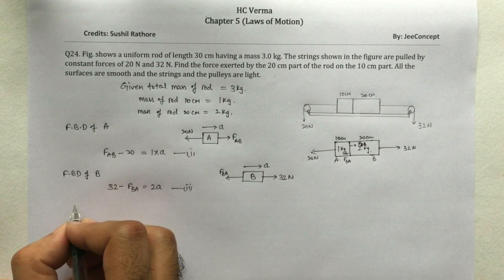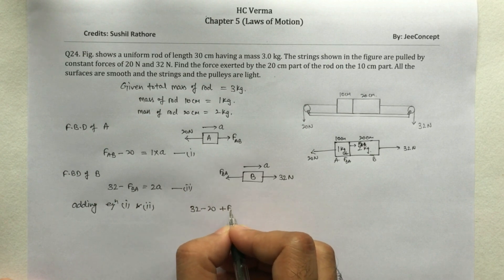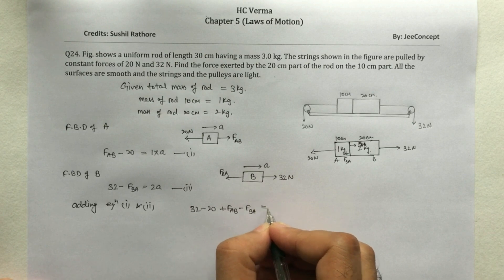Now adding equation 1 and 2, we will get 32 minus 20 plus FAB minus FBA equals A plus 2A.